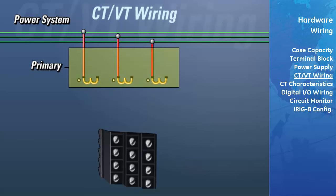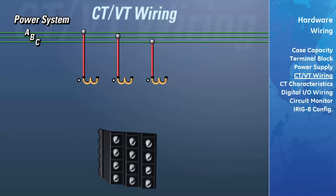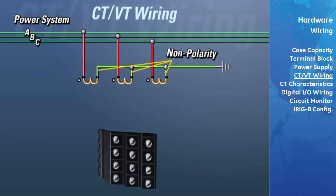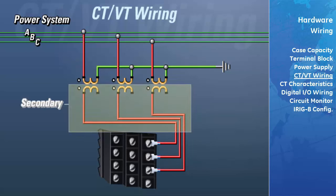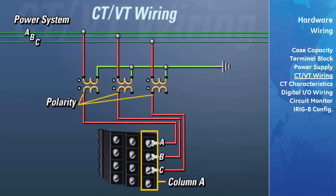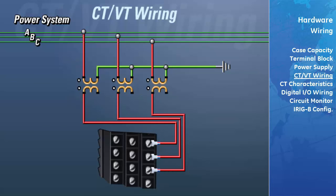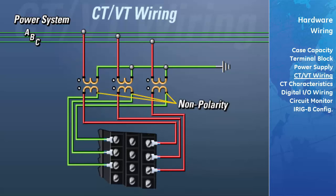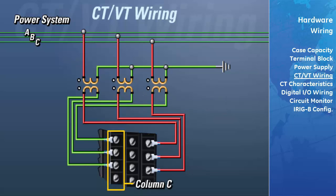When wiring voltages in a Y configuration, the polarity side of each VT (also called PT or potential transformer) is connected to one of the phases of the power system, while the non-polarity sides are all connected together and tied to ground. On the secondary side of the VTs, the polarity side of each transformer should be connected to column A of that row on the terminal block. The non-polarity side of all VTs should be connected to column C of that row, tied together and connected to ground.